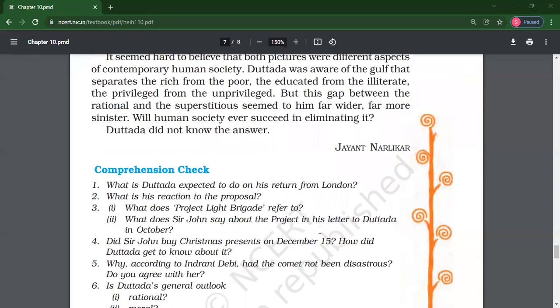Sir John bought Christmas gifts on December 15. He sent an urgent telex message to Dattada to tell him. Correct. Anmol is saying Sir John wrote a telex to Mr. Dattada and he was confident now of buying the Christmas presents on December 15. On December 15, the comet was at the distance of 80,000 kilometers. The project was successful and it had gone far away. Next question.